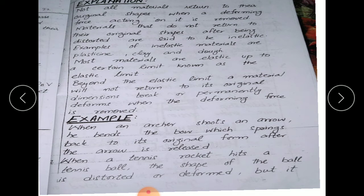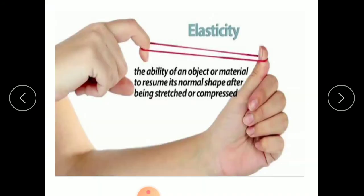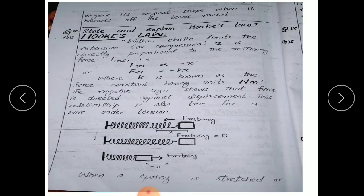Some examples of elasticity: when an archer shoots an arrow, he bends the bow which springs back to its original form — meaning the bow uses an elastic material that returns to its original shape. When a tennis racket hits a tennis ball, the shape of the ball is distorted or deformed. Basically, elasticity is the ability of a material to regain its original shape when being stretched or compressed. If it does not regain its original position, it is not an elastic material.